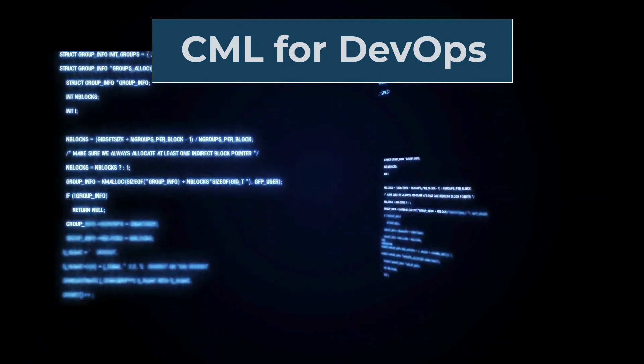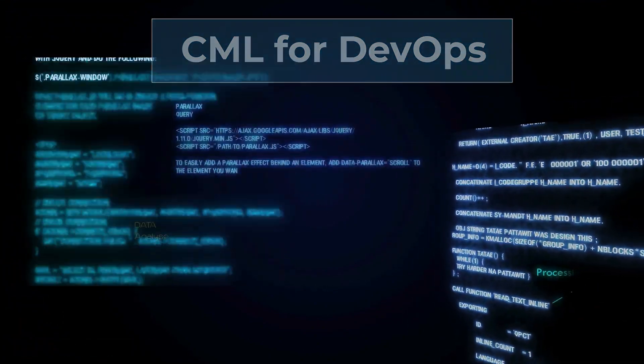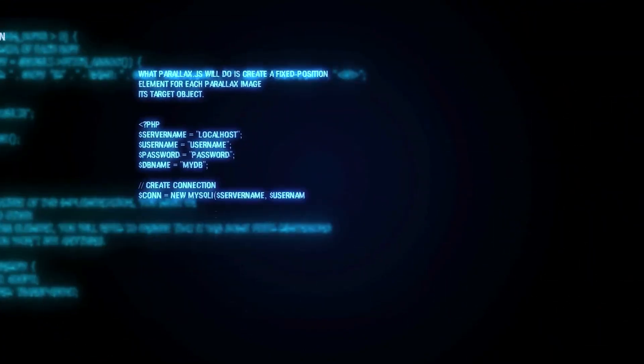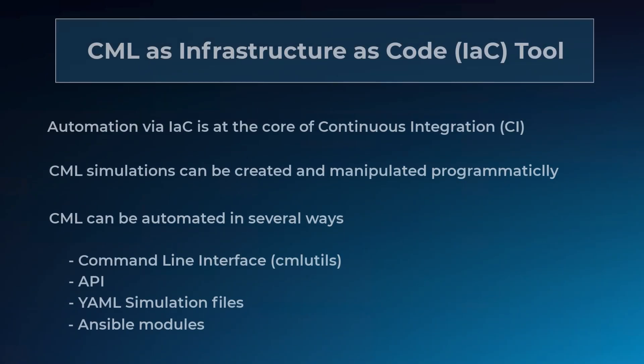CML helps us build our infrastructure as code to keep our networks flexible, resilient, and compliant. As an infrastructure as code tool, automation via IaC is at the core of continuous integration.